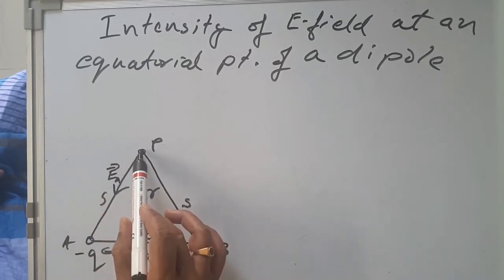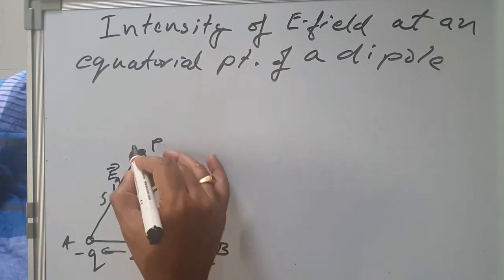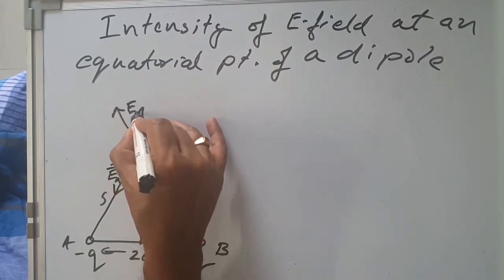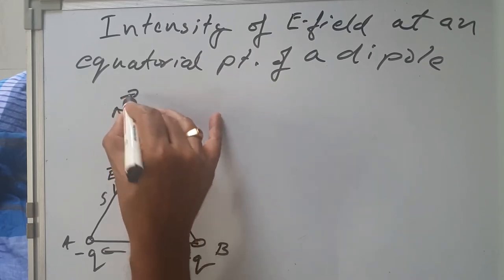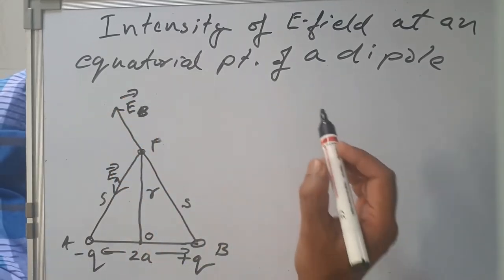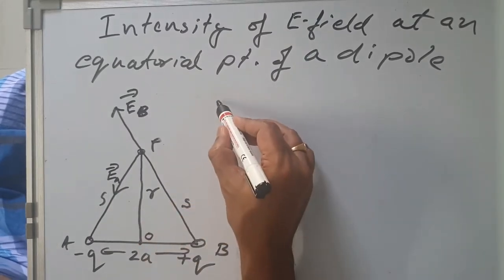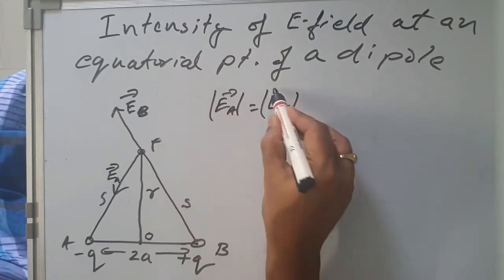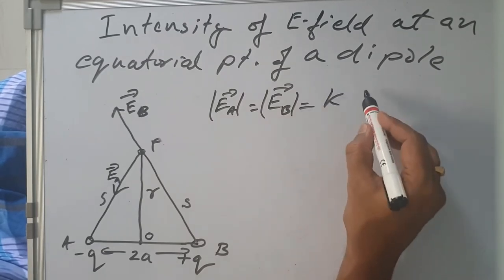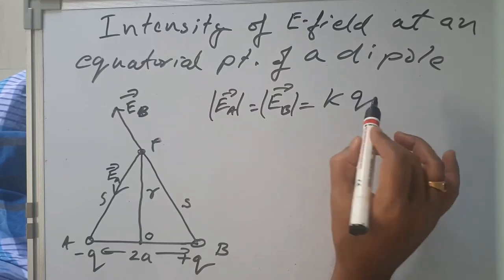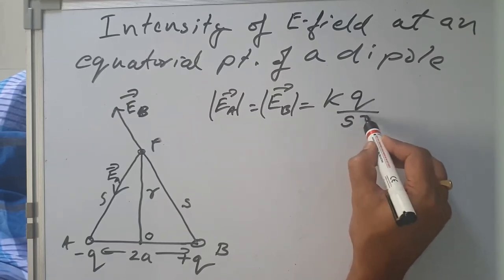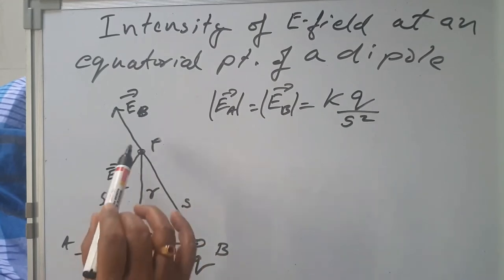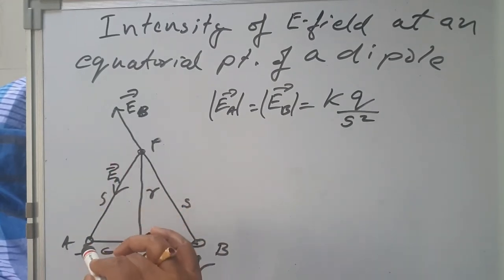The intensity of electric field at point P due to the positive charge at B: a unit positive charge placed here gets repelled, so the electric field here is EB. The magnitude of EA is the same as the magnitude of EB, and it is equal to k times Q upon s squared. This is the magnitude of electric field EA as well as EB, where s is the distance of point P from either A or B.